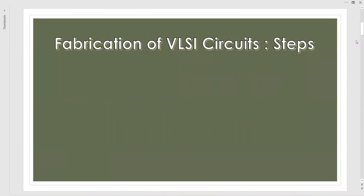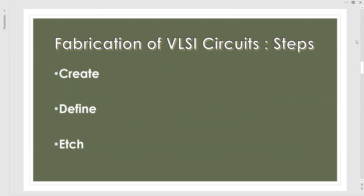The very first thing we have to discuss here in the fabrication of VLSI circuits is what are the steps involved for the purpose of fabrication. There are three steps: the very first one is the create mode, the second one is the defining mode or define, and the third one is the etch. These three steps are defined clearly in the process for the purpose of fabrication of VLSI circuits.